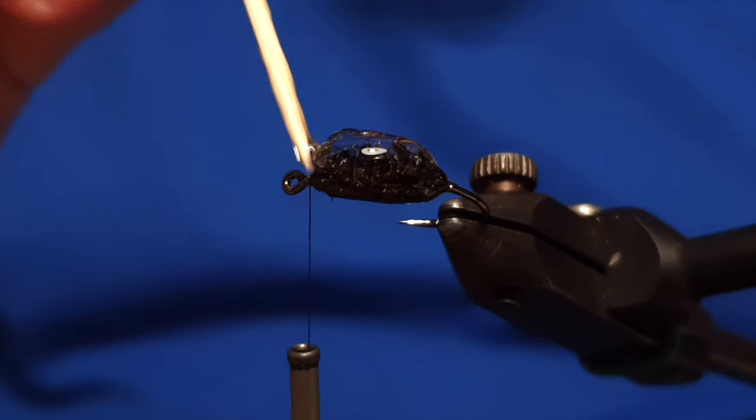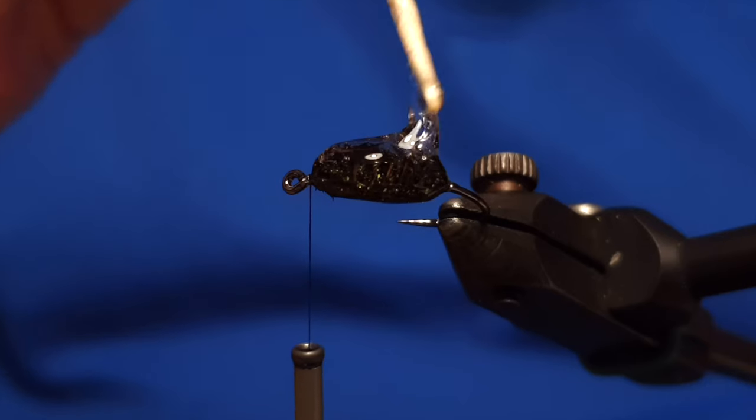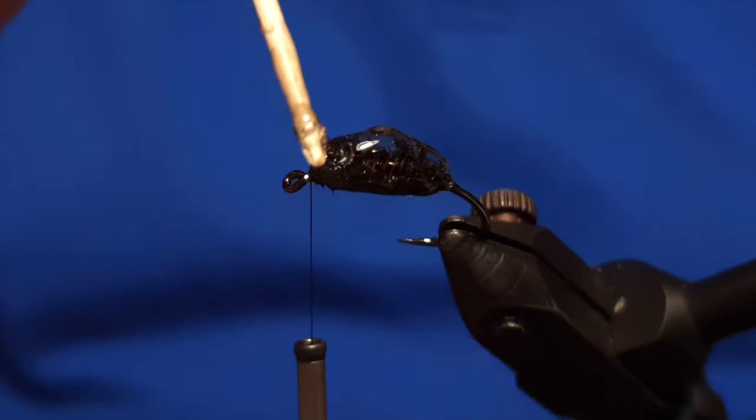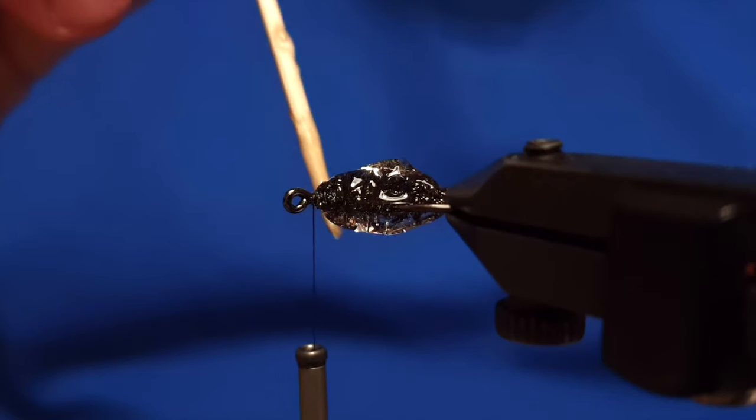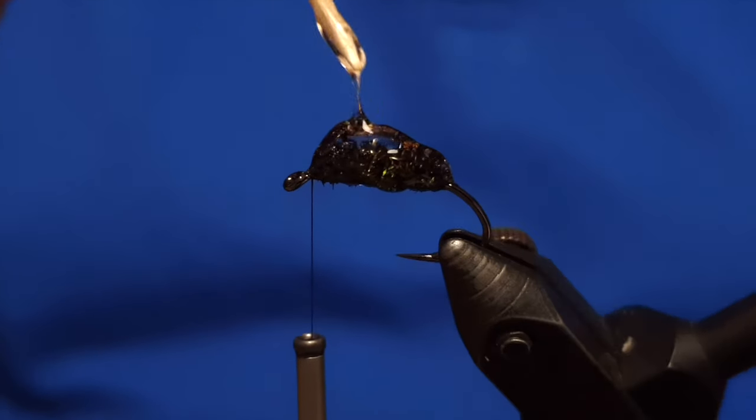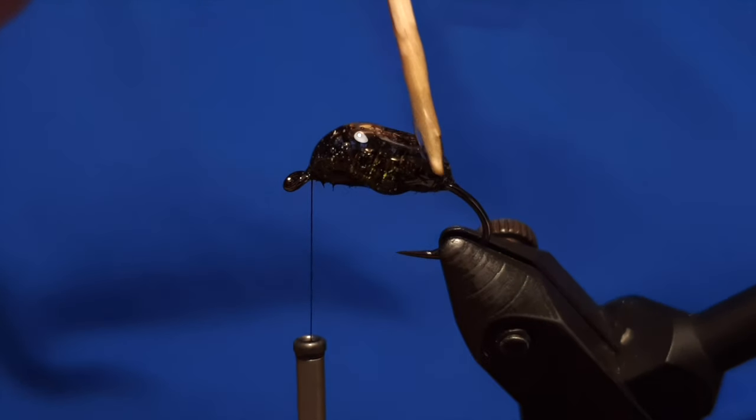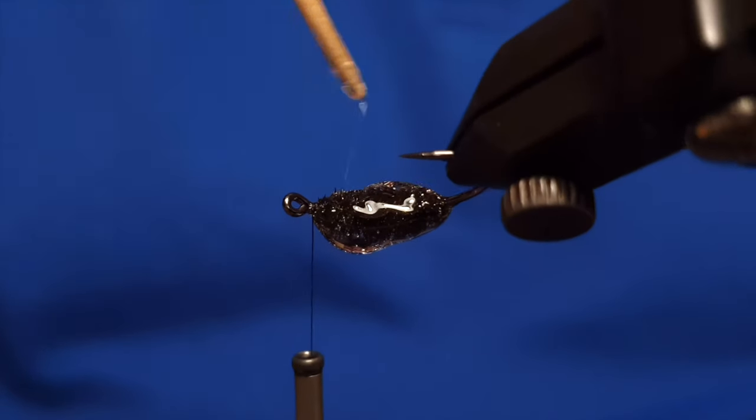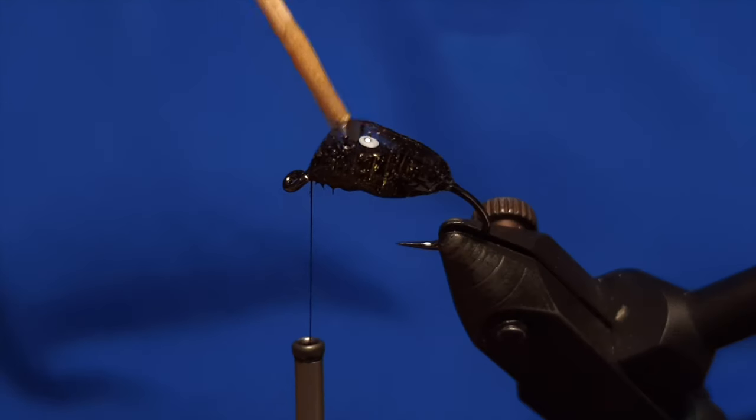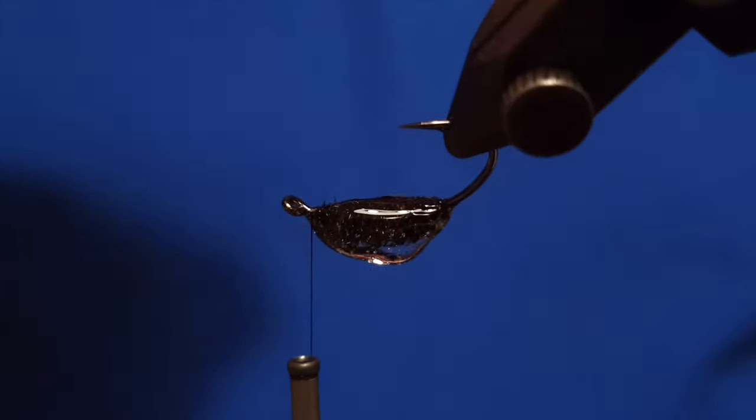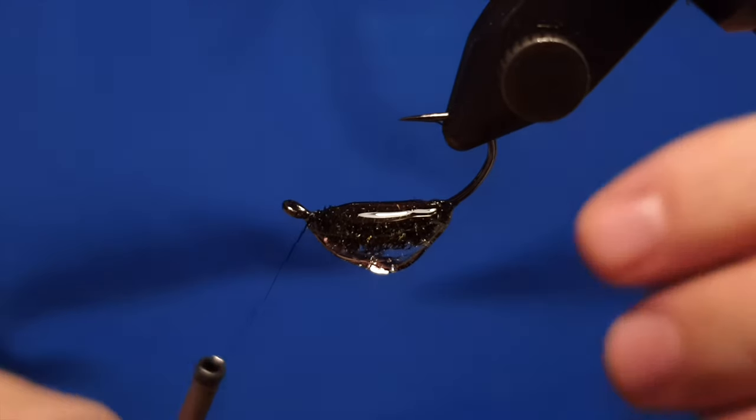You see that I'm working mostly on the back of the fly, not on the belly of it, because I want the back of it to be thick and the belly of it to be thin. The gap of the hook is something which we must be aware of when forming a body like this.